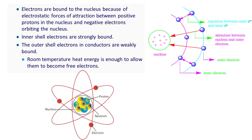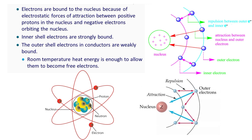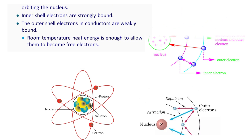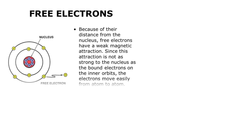The electrons present at the outermost orbit of the atom are attracted by the nucleus, because the nucleus contains protons. There will be a force of attraction between the proton and the electron — so those are the bound charges. The electron is bounded within the atom, and that's why it is called a bound charge.